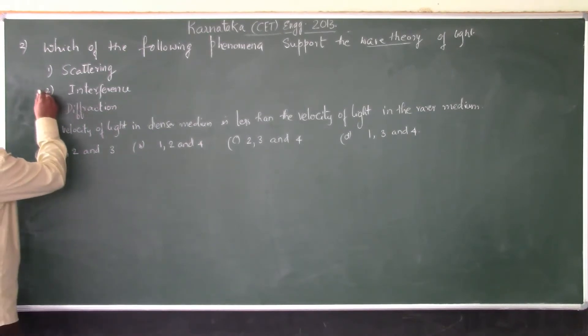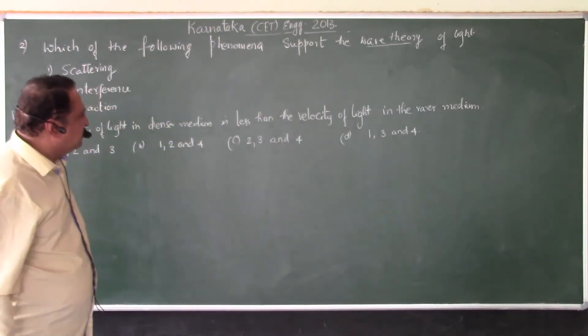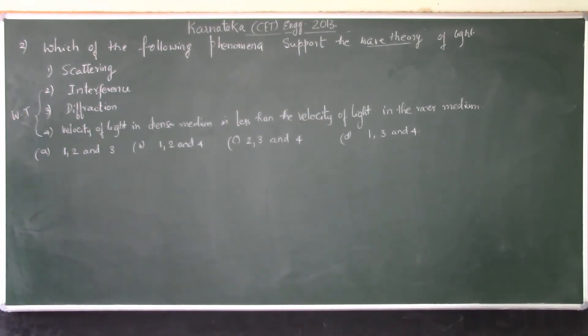These three phenomena are purely based on wave theory of light or wave nature of light. Whereas, we also have one more phenomenon called polarization, which confirms the fact that light travels as an electromagnetic wave or light is an electromagnetic wave.